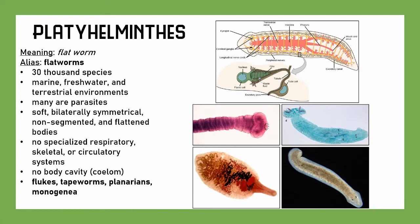Next, we have Platyhelminthes, also known as flatworms — because that's what the name means. There are 30,000 species, found in marine, freshwater, and terrestrial environments. Importantly for humans, many are parasites, which is why we study a lot of them. They have soft, bilaterally symmetrical, non-segmented, and flattened bodies with no specialized respiratory, skeletal, or circulatory systems. They have no body cavity, also known as acoelomate. Many planarians have these funny almost googly-eye-like eye spots. Representative species include flukes, tapeworms, planarians, and Monogenea.